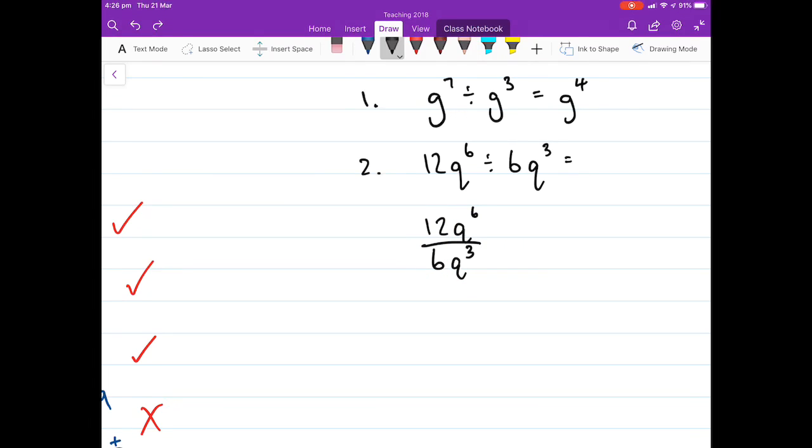So, what's 12 divided by 6? 12 divided by 6 is 4. 2. 2, well done. q to the power of 6 divided by q cubed. What do we do to the indexes?